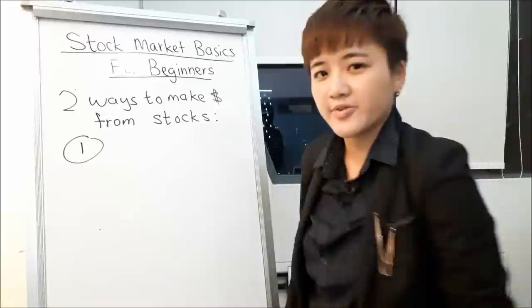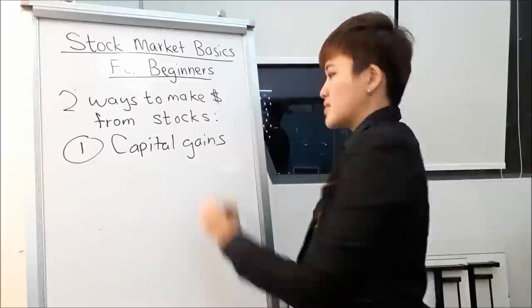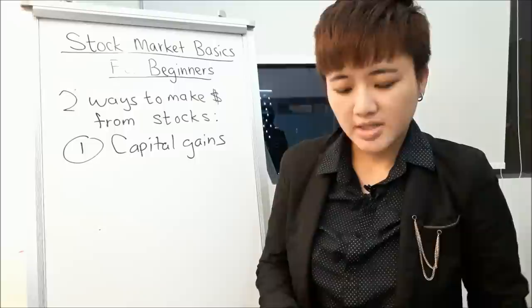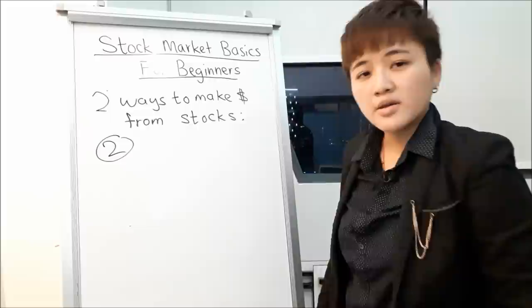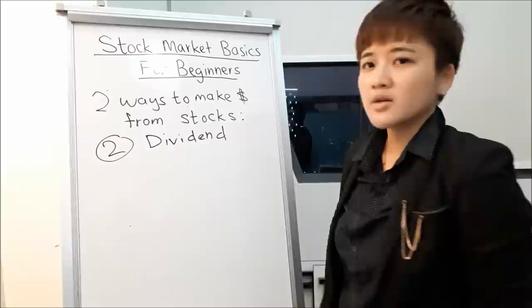There are two ways to make money from the stock market. The first is through capital gains — you buy a stock, hope the value goes up, and then sell it for a profit. In other words, you're investing for growth.